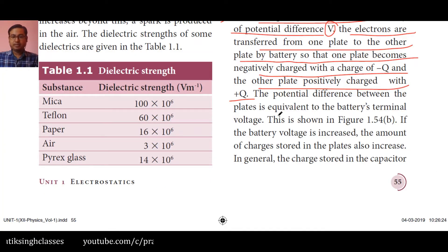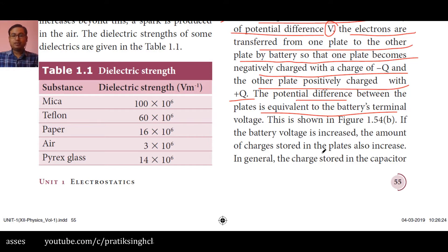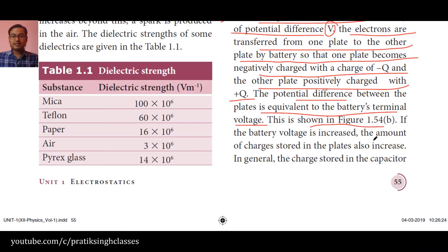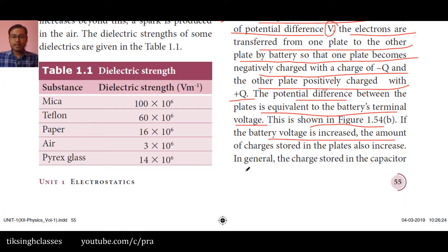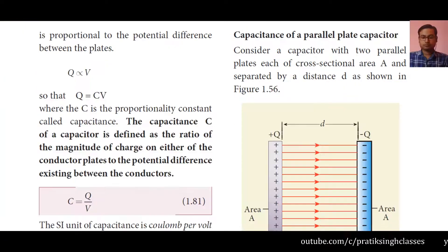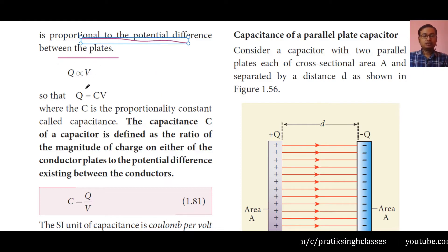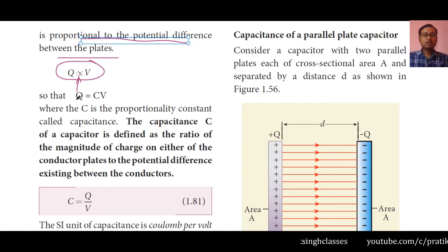The potential difference between the plates is equivalent to the battery's terminal voltage. If the battery voltage is increased, the amount of charge stored in the plates also increases. In general, the charge stored in the capacitor is proportional to the potential difference between the plates: Q is directly proportional to V. To remove the proportionality sign, we introduce a constant C, giving us Q = CV, where C is the proportionality constant called the capacitance.